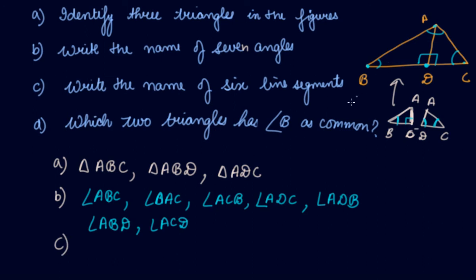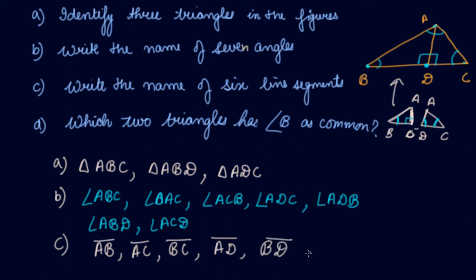Write the names of six line segments. Can you name the line segments? AB is a line segment, then AC is a line segment, then BC is a line segment. Then AD is a line segment, then BD is a line segment, and then DC is a line segment. That gives us six line segments in this figure.